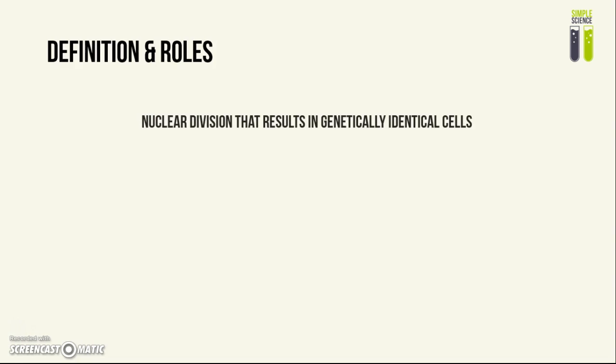So first of all we're going to look at the definition and the roles of mitosis. Mitosis is a type of nuclear division, which means dividing up the nucleus of a cell, and this produces two genetically identical cells.